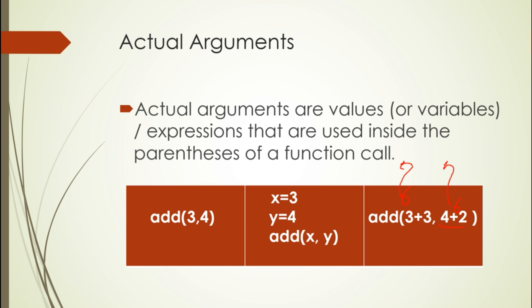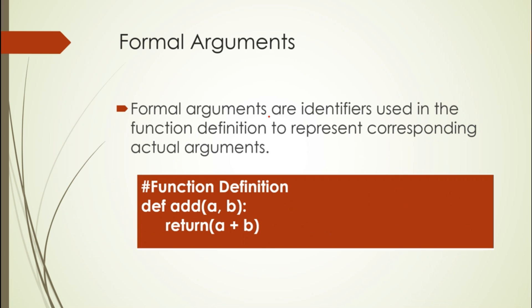Formal arguments are identifiers used in the function definition to represent the corresponding actual arguments. When we write the function definition, whatever variables or identifiers we use, those identifiers are called formal arguments. They will take input from the called function. When we pass four and five, these values will be assigned to a and b, then computed, and finally the result is returned.